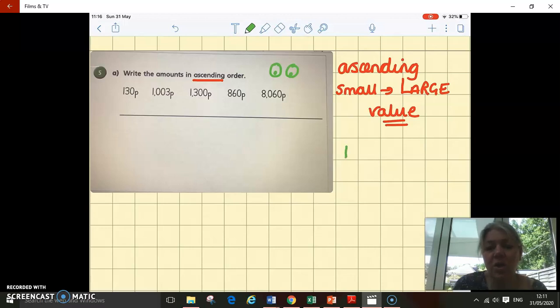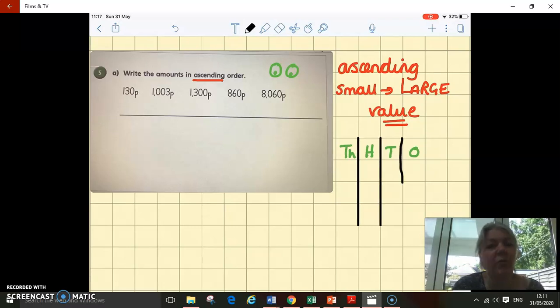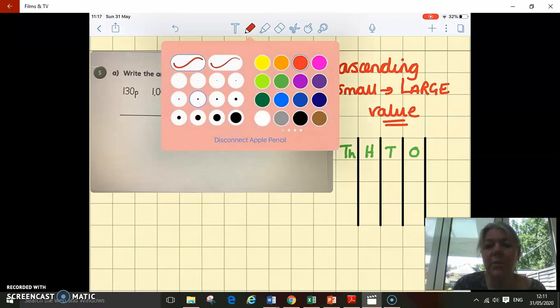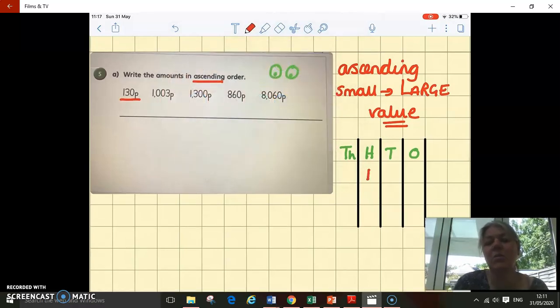I'm going to use something to help me work out the value. I'm going to look carefully at all five different amounts and think about their place value. So I'm going to draw myself a place value grid. We're really familiar with these, we've used them lots in Year 4 this year. So here's my place value grid: I've got thousands, hundreds, tens, and ones.